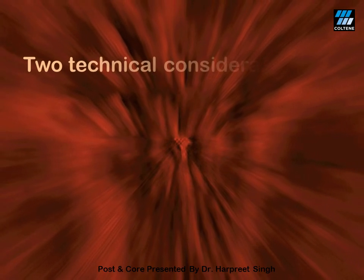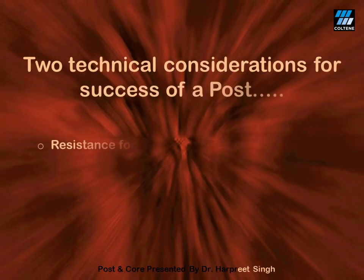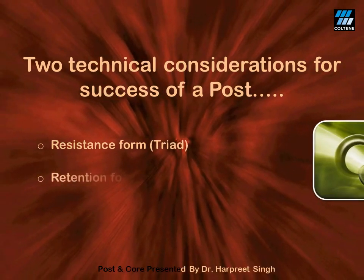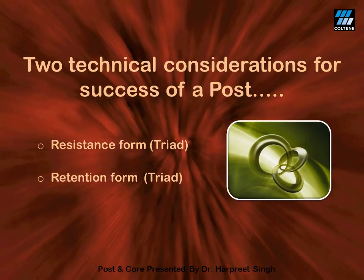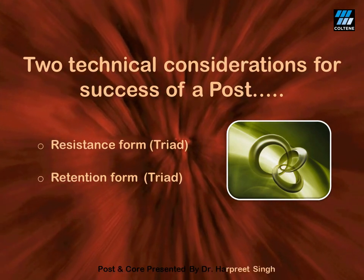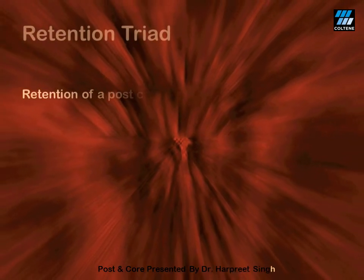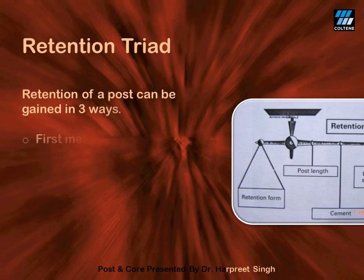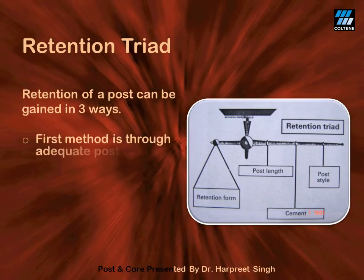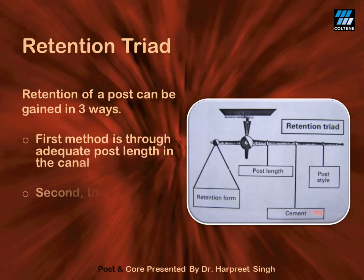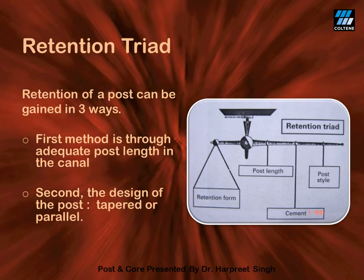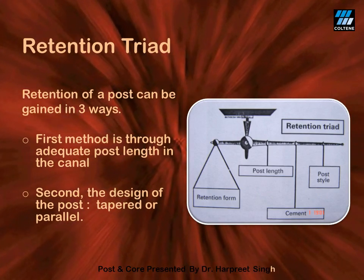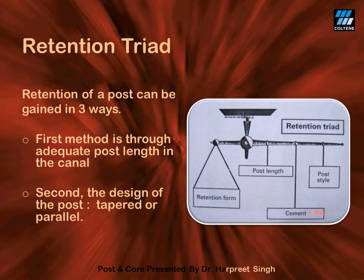Two features which must be given due consideration when performing post-and-core procedures are the resistance triad and the retention triad. Triad, as the name suggests, means three factors — each for establishing resistance and retention form to ensure the success of post-and-core. Retention of a post can be gained in three ways: first, the type of post used; second, the design of the post — whether tapered or parallel — which we have discussed but need to address in more detail now.